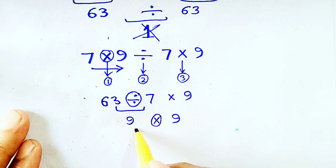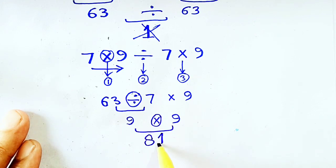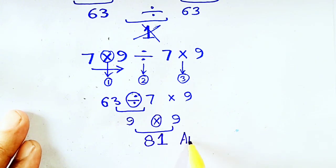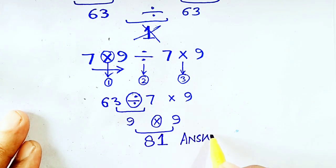it's turn of multiplication. 9 times 9 will be equal to 81, which will be the answer. Thank you.